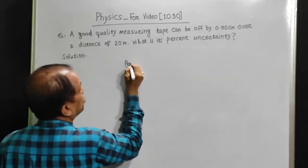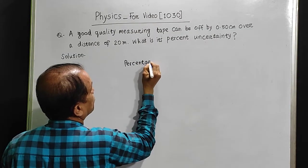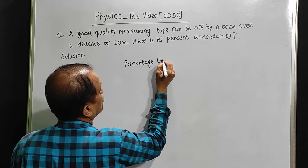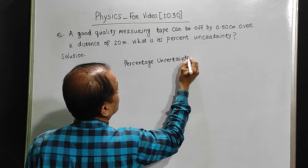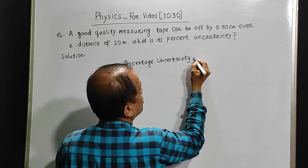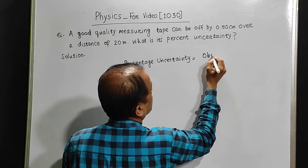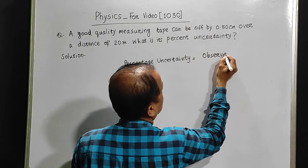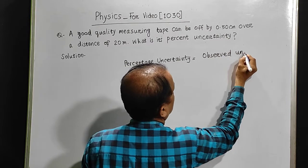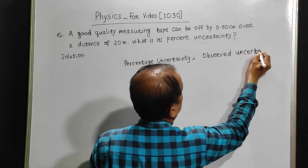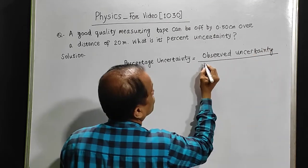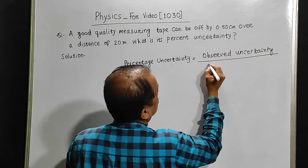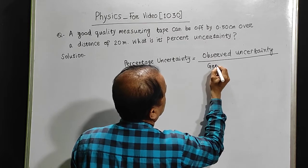Percentage uncertainty is the observed uncertainty upon the gross measurement.